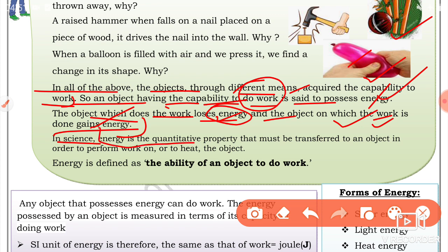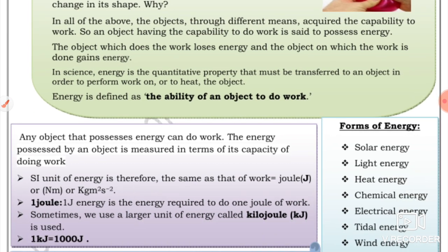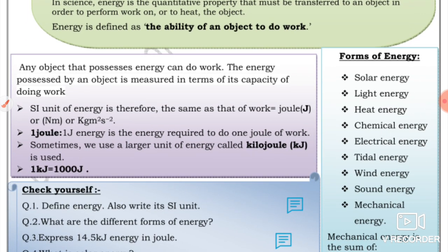In science, energy is the quantitative property that must be transferred to an object in order to perform work on or to heat the object. Energy is defined as the ability of an object to do work.